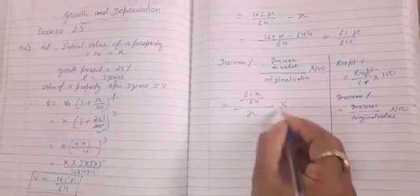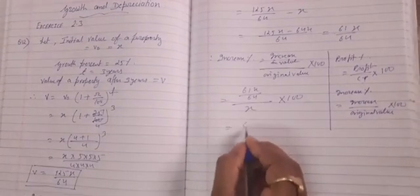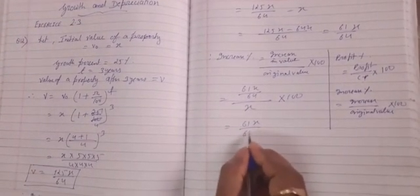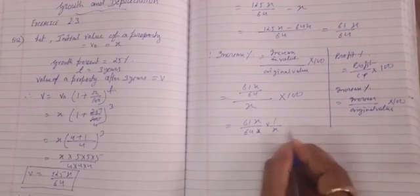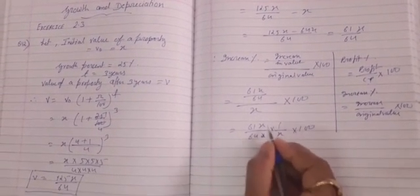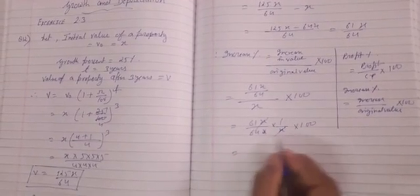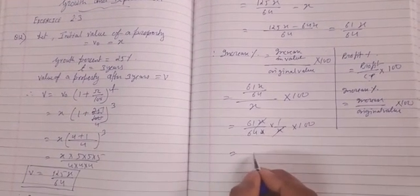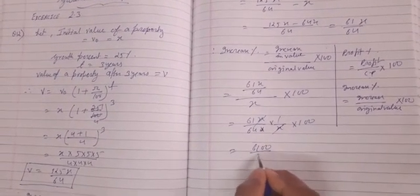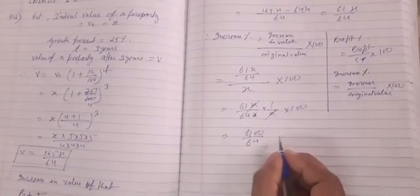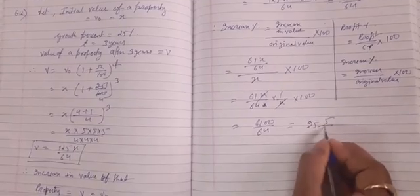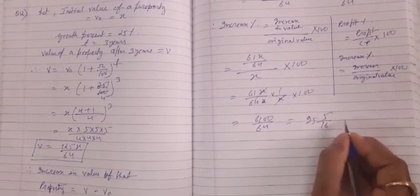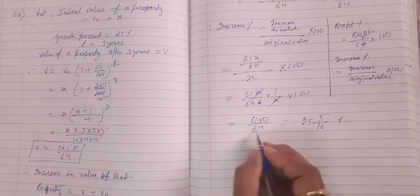So it will be 61x/64 and then reciprocal 1/x times 100, so x cancels, and then here is 6100. You may reduce it by dividing by 2, and when you will divide you will get 95 5/16 percent. That is your answer. Thank you.